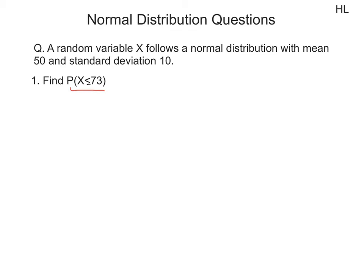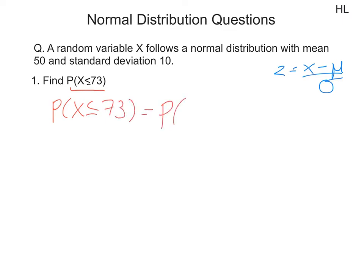Previously, we saw that the z-score formula was equal to x minus mu over the standard deviation. So this is what we are going to use to solve this question. The probability that x is less than or equal to 73 is equal to the probability our z-score is less than or equal to x minus mu divided by our standard deviation.